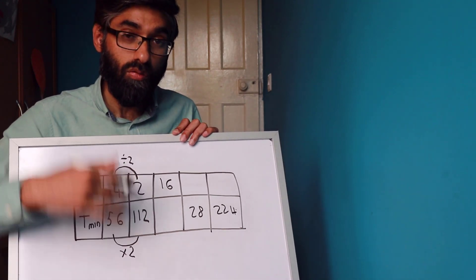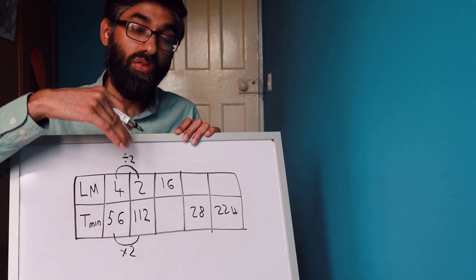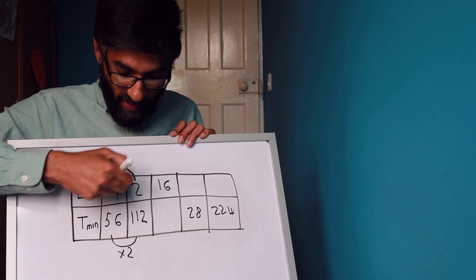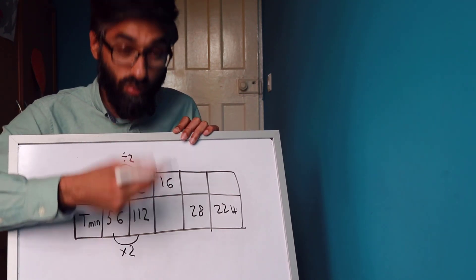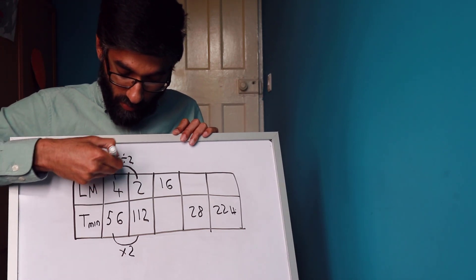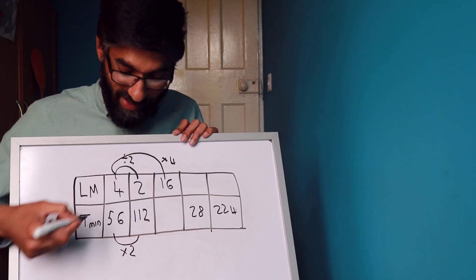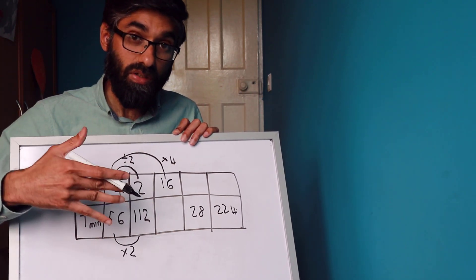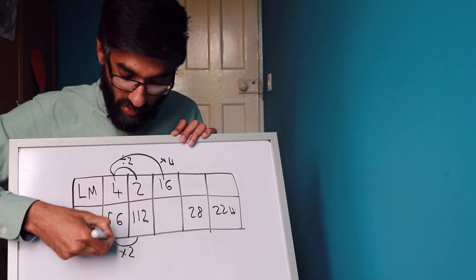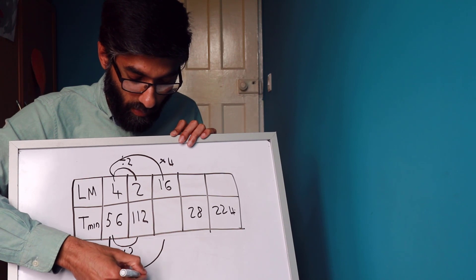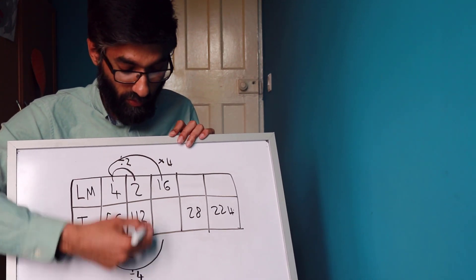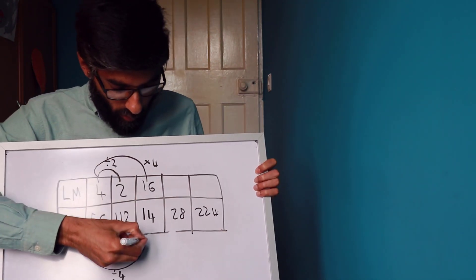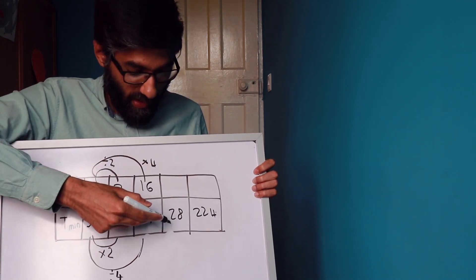In inverse proportion, one goes up and the other goes down. For 16 lawnmowers: four times four gives 16. More lawnmowers means less time, so we divide the time by four: 56 divided by 4 is 14 minutes.